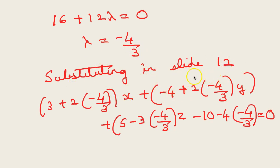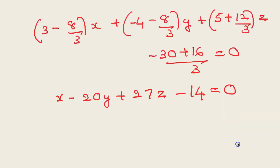Substituting λ = −4/3 into the equation: (3 + 2(−4/3))x + (−4 + 2(−4/3))y + (5 − 3(−4/3))z − (10 − 4(−4/3)) = 0. Simplifying each bracket: (3 − 8/3)x + (−4 − 8/3)y + (5 + 4)z − (10 − 16/3) = 0. Taking LCM and cross-multiplying, the final answer is: x − 20y + 27z − 14 = 0.